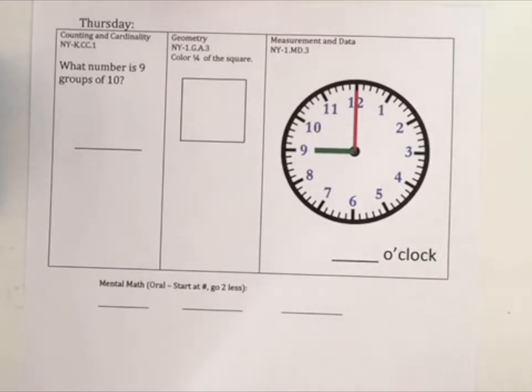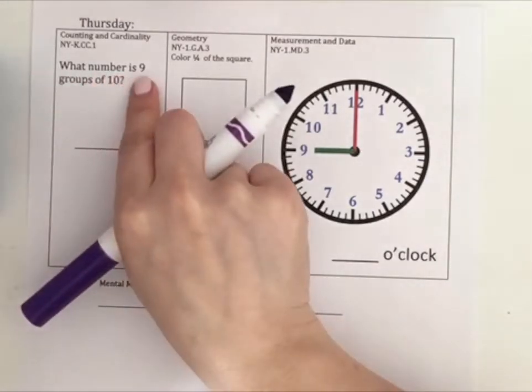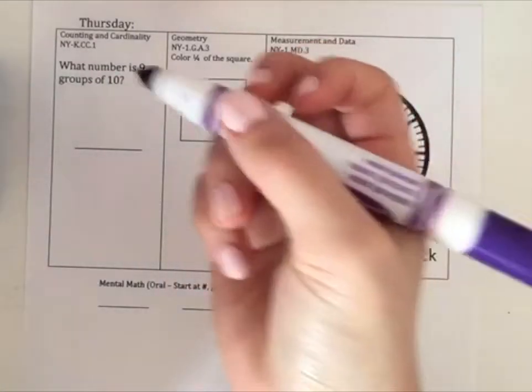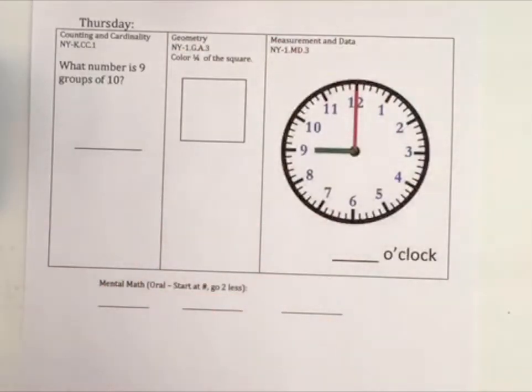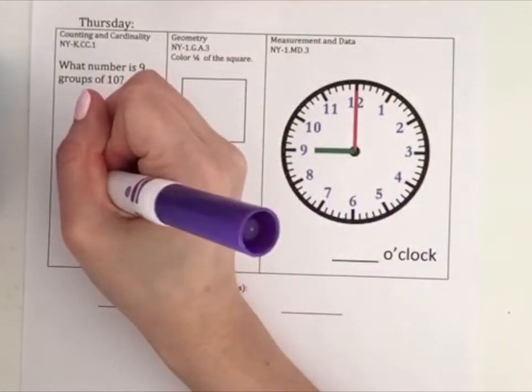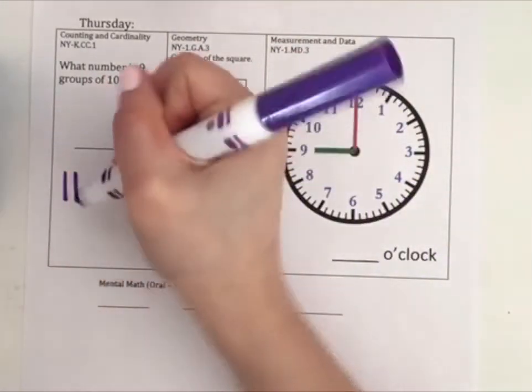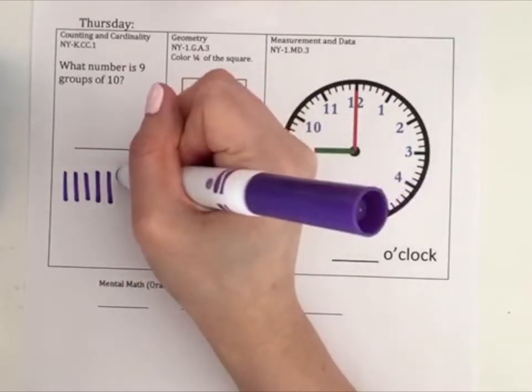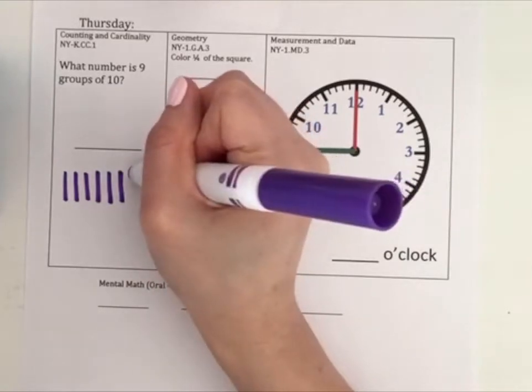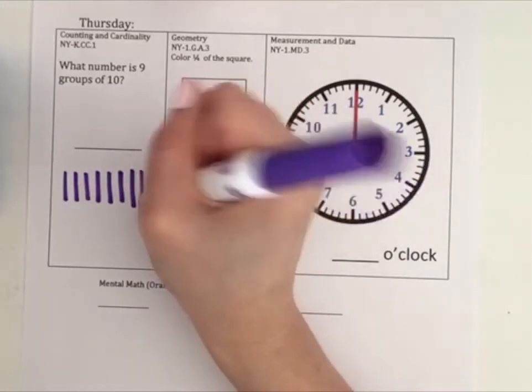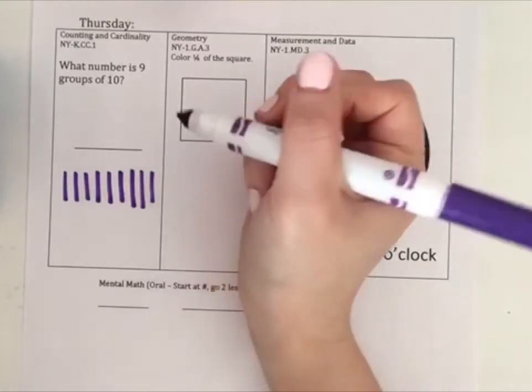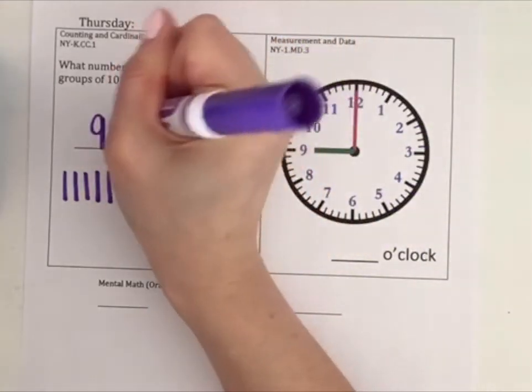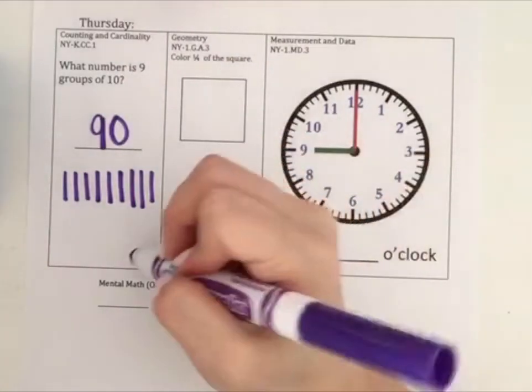In the first box, what number is 9 groups of 10? That means we're counting by 10s nine times. 10, 20, 30, 40, 50, 60, 70, 80, 90. So 9 groups of 10 is 90. Did you get that? Give yourself a check.